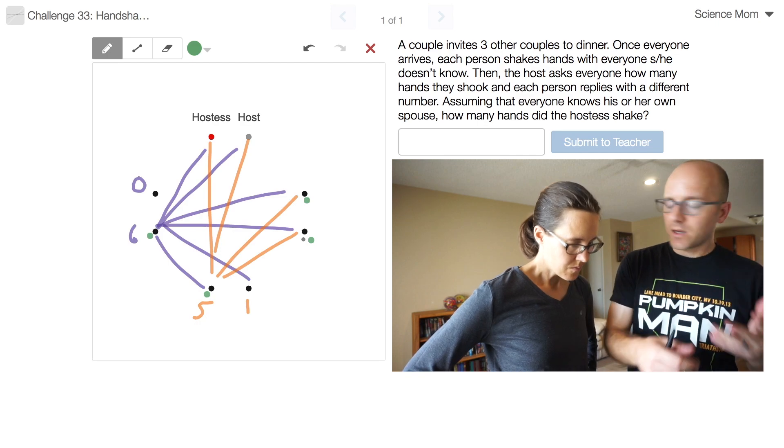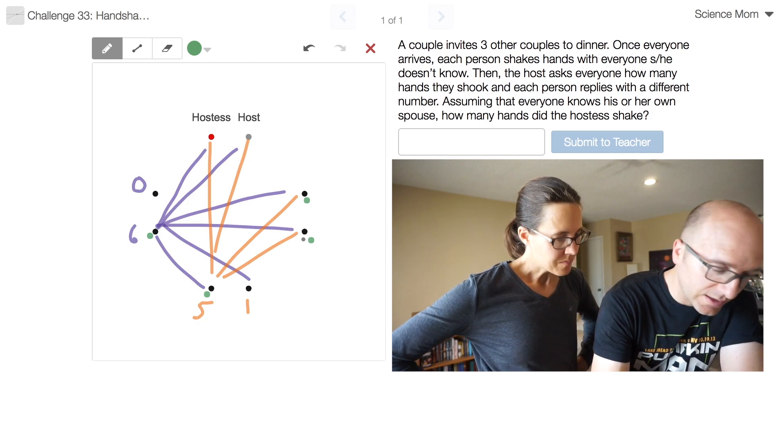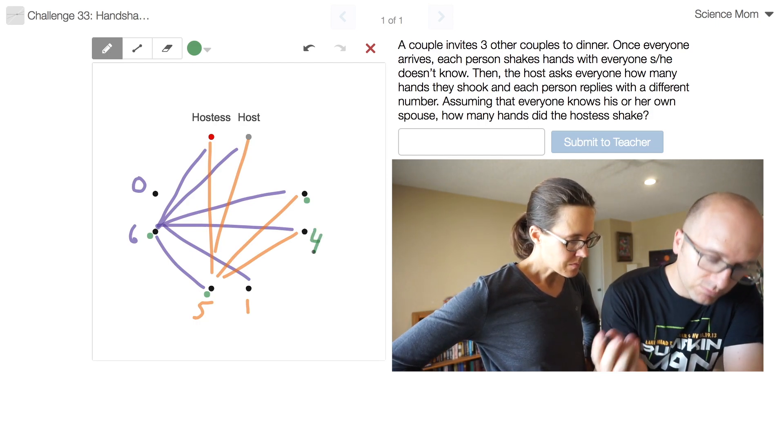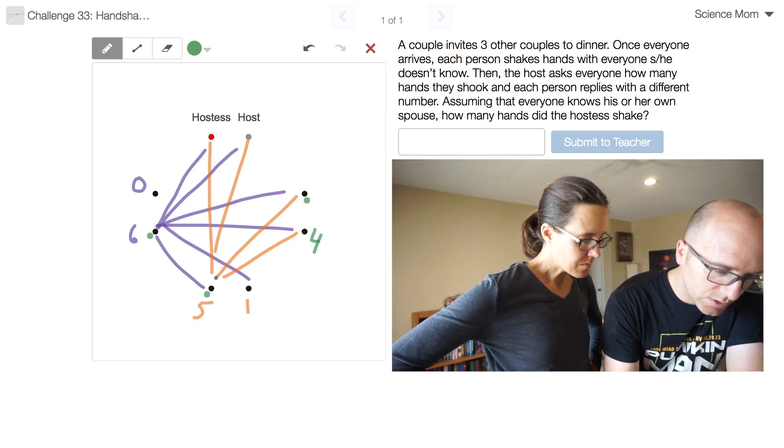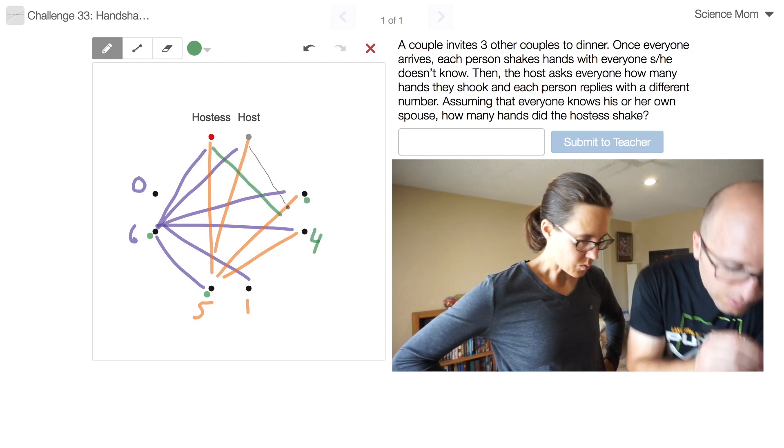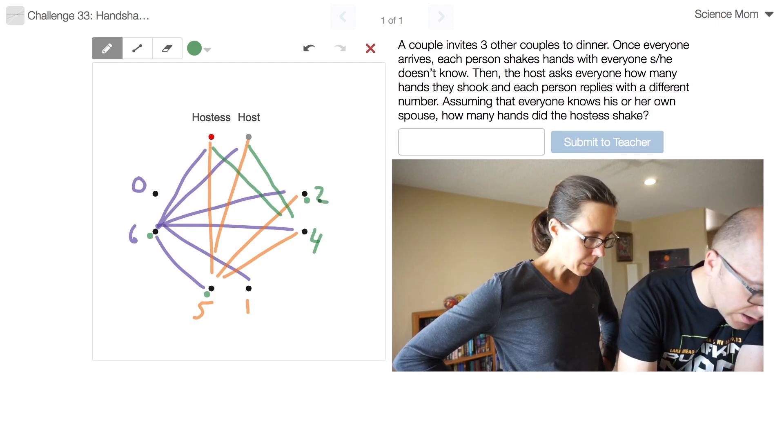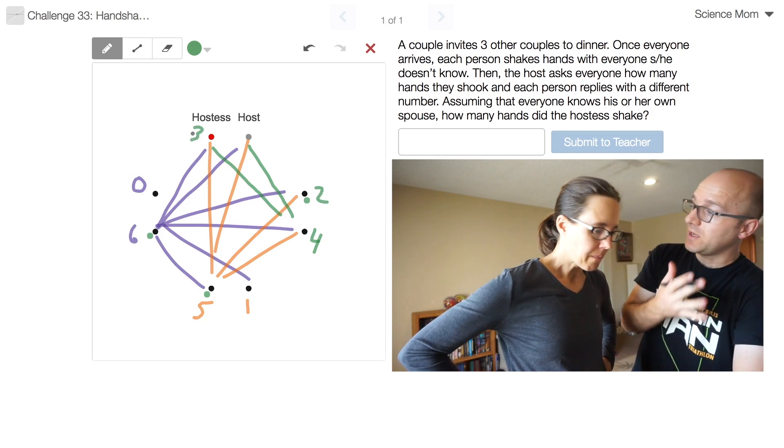It was one of these proof-by-contradiction ideas. So the hostess couldn't have shaken four hands, one of these two had to. So maybe that guy shook four hands. So one, two. So he has to shake the host and hostess hands to get his four. That's right. And that would make this one the two, which then only leaves three for the hostess.